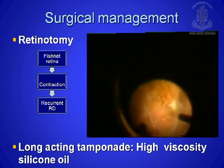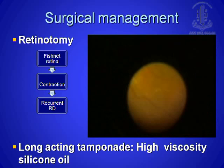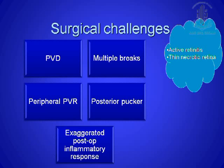Usually you will need a long-acting tamponade and sometimes high-viscosity silicone oil. The surgical challenges in ARN are basically PVD-related: because of vitreous opacities, it is difficult to distinguish the posterior vitreous from the retina. If PVD is already there, it's easy, but if not, you have to be careful. There are multiple posterior breaks, the retina is thin, peripheral PVR, posterior pucker, and an exaggerated post-inflammatory response. Always remember there is active retinitis going along — so trying to induce a PVD over active retinitis is very difficult.